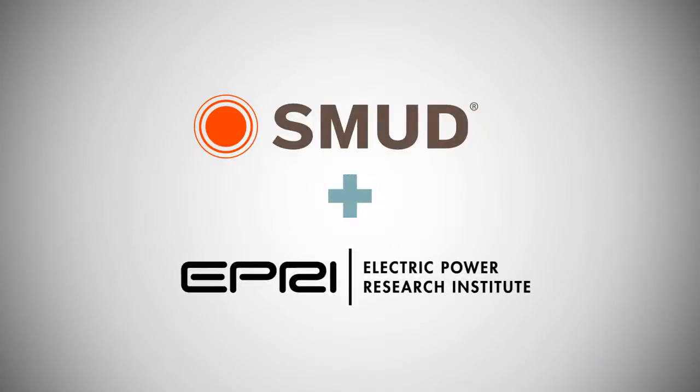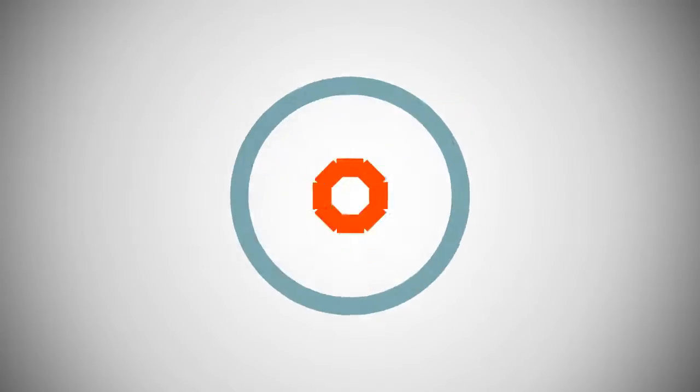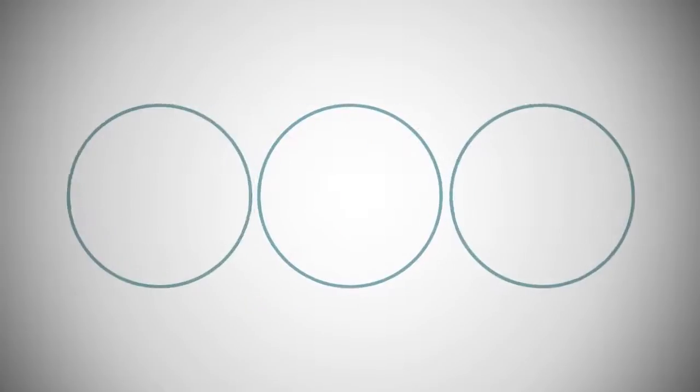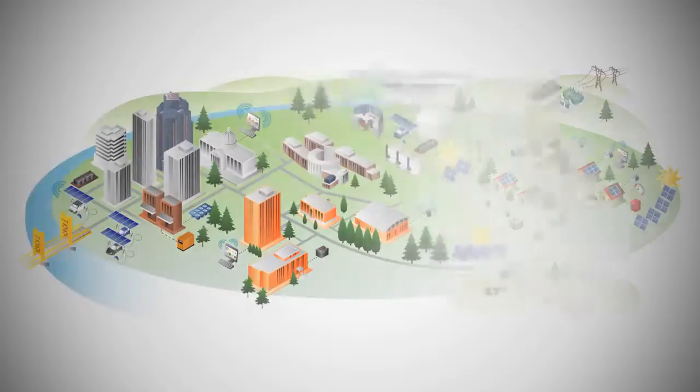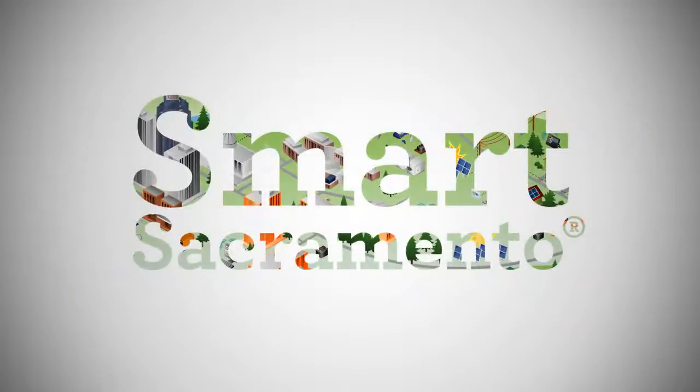Together with EPRI and partners around the world including utilities from North America, Japan, Australia and Europe, SMUD is leading the way toward a smart grid enabled future with new technology and energy efficiency. Smart Sacramento is SMUD's $308 million smart grid initiative.